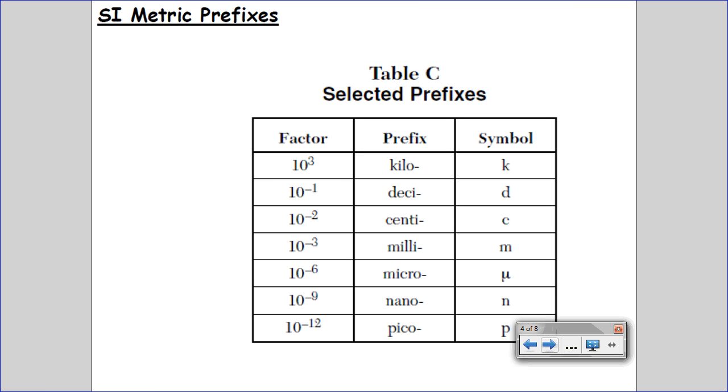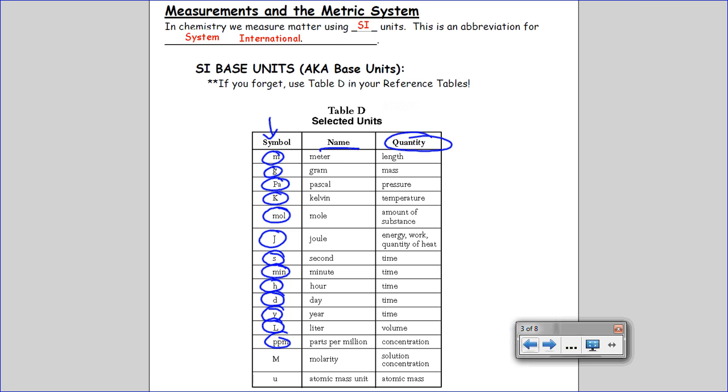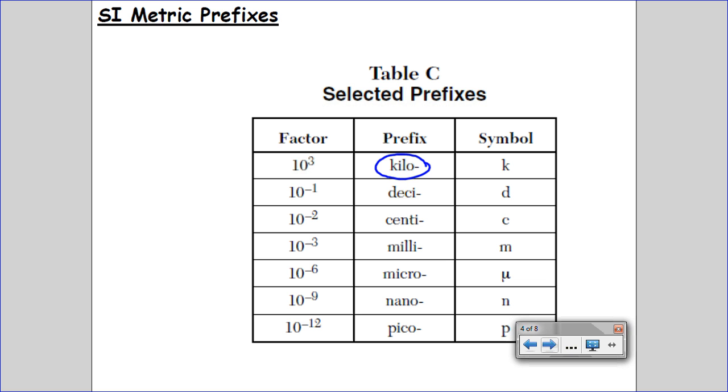In the next portion of our notes, table C is about prefixes. Everybody's heard of a kilometer. One kilometer means kilo-meter. Meter is back here under that first option, so a kilometer means it has a prefix with a factor of ten to the three.